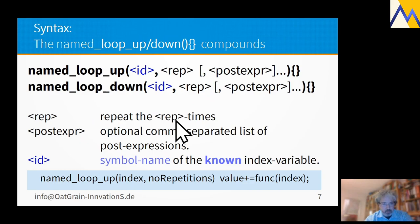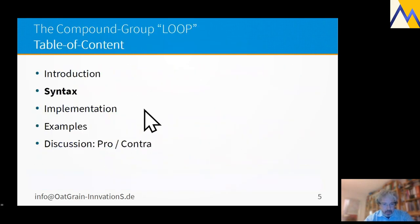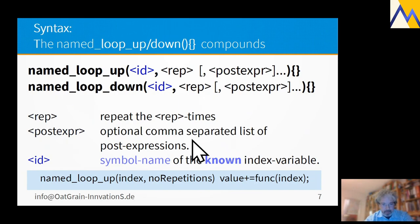The loop statement uses a hidden index variable while the named loop up and named loop down use accessible known index variables. For example, a named loop up could identify the index counter index and repeated general repetitions and use the index variable in the block statement.